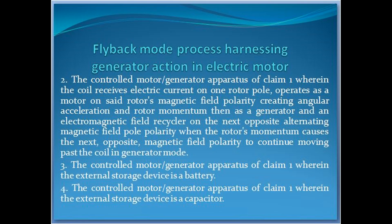The controlled motor-generator apparatus of claim one, wherein the coil receives electric current on one rotor pole, operates as a motor on said rotor's magnetic field polarity creating angular acceleration and rotor momentum, then as a generator and an electromagnetic field recycler on the next opposite alternating magnetic field pole polarity, when the rotor's momentum causes the next opposite magnetic field polarity to continue moving past the coil in generator mode.